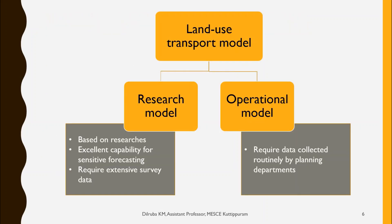There are two types of land use transport models: research models and operational models. Research models are based on land use studies and have excellent capability for sensitive forecasting, but require extensive survey data. Operational models, on the other hand, require only data routinely collected by planning departments, which most planning departments in the country already have.